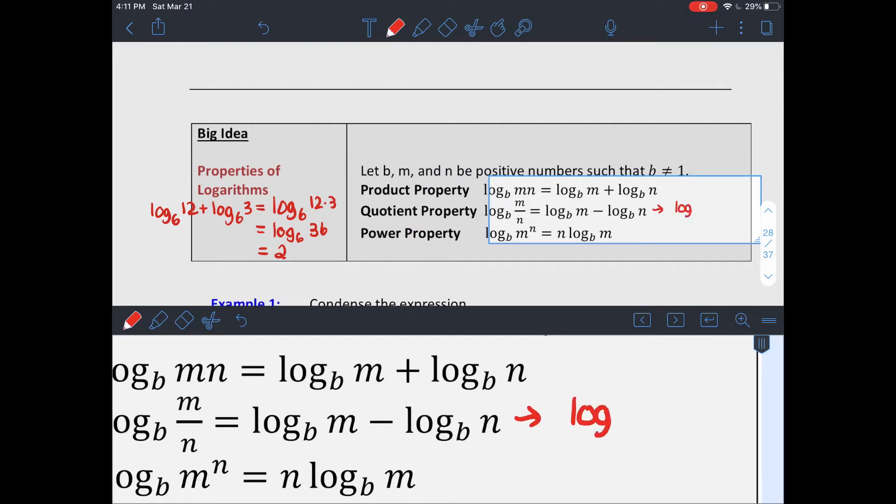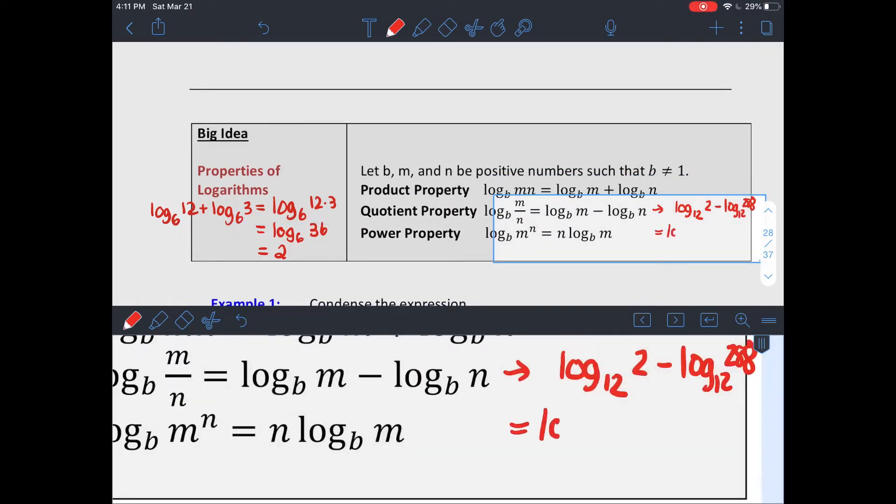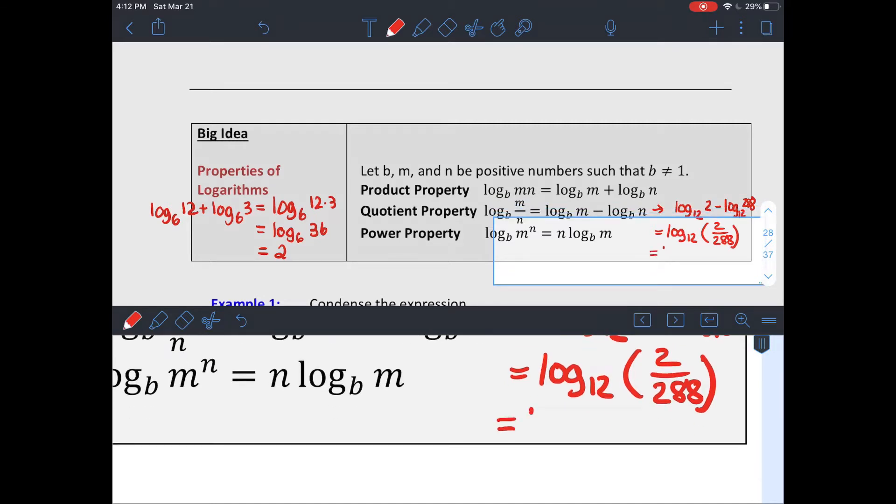There's a similar property for subtracting two logarithms. So say that I have log base 12 of 2 minus log base 12 of 288. Individually, you don't know the powers for those. But if I condense them back and it's subtraction, it turns into a logarithm of those two values being divided.